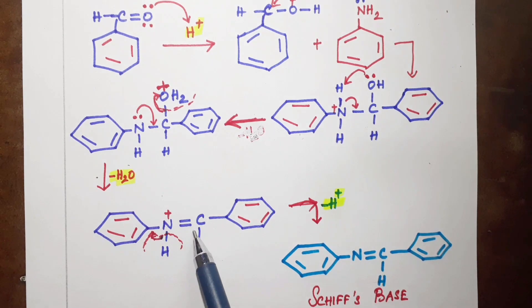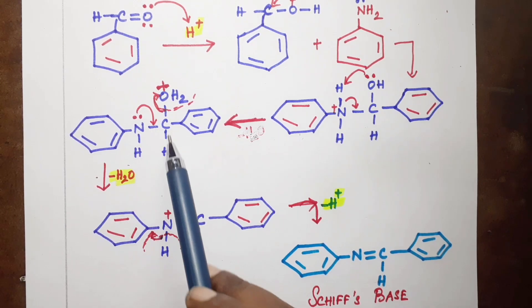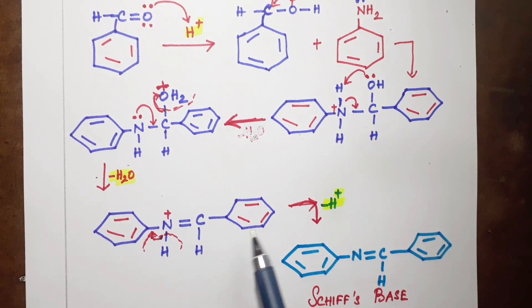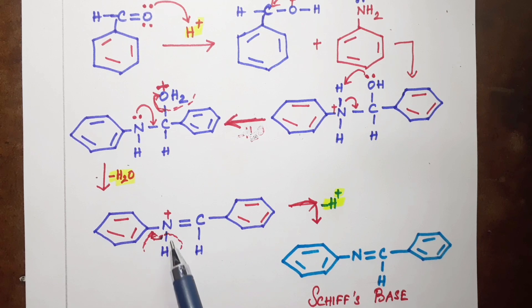After elimination of water, nitrogen forms a double bond with the carbon (C=N), giving the Schiff's base product with the benzene ring attached. This C=N bond is the characteristic feature of the Schiff's base.